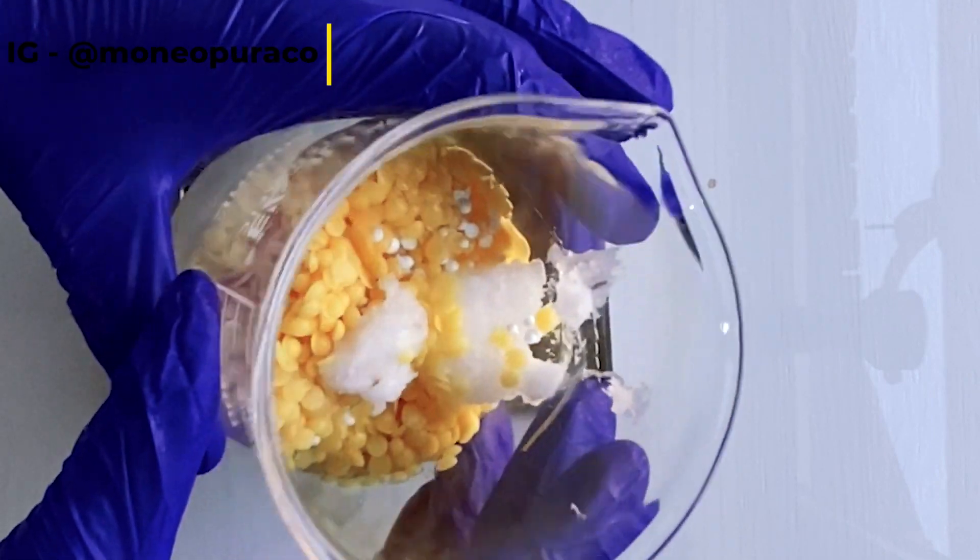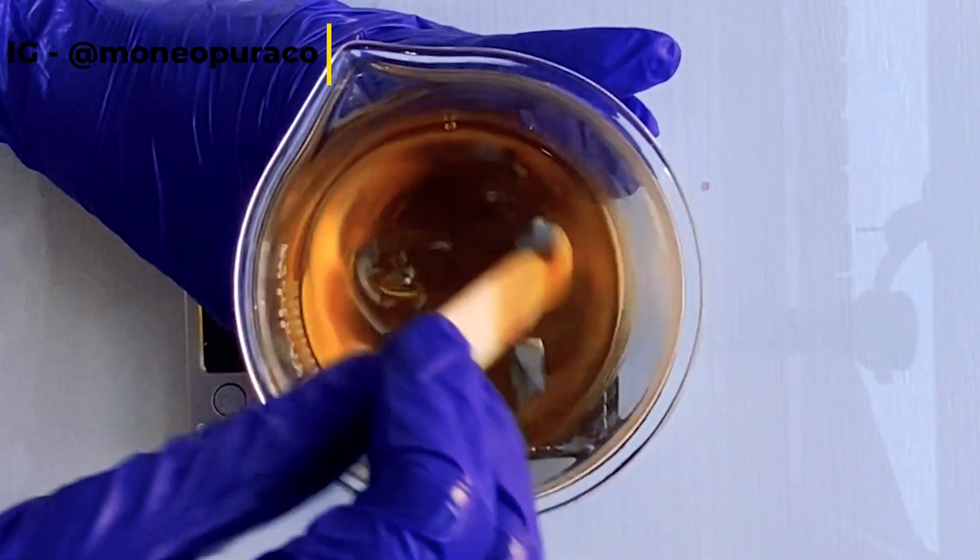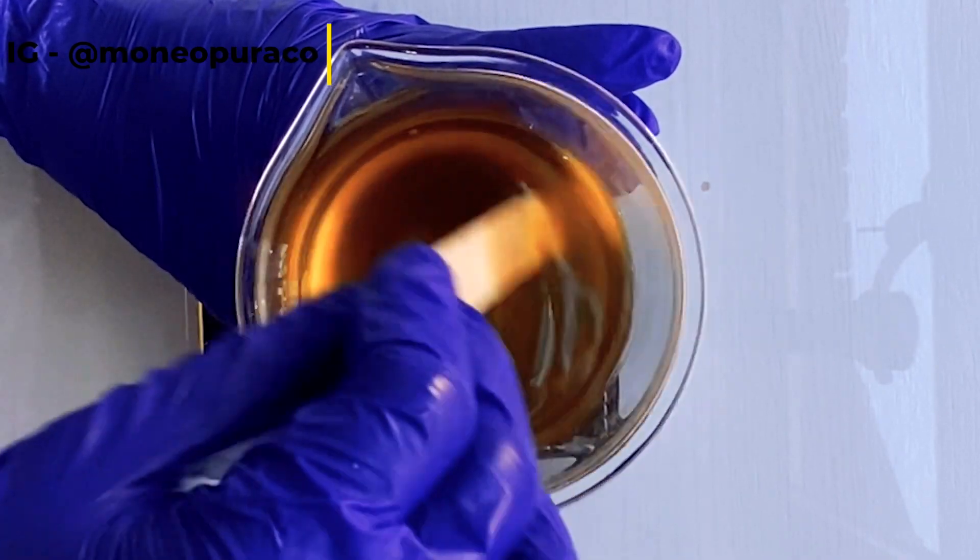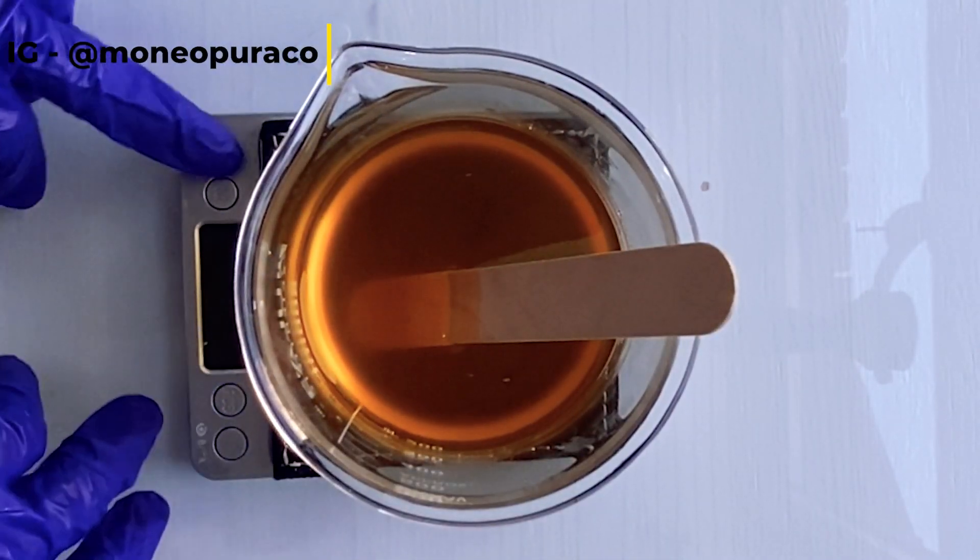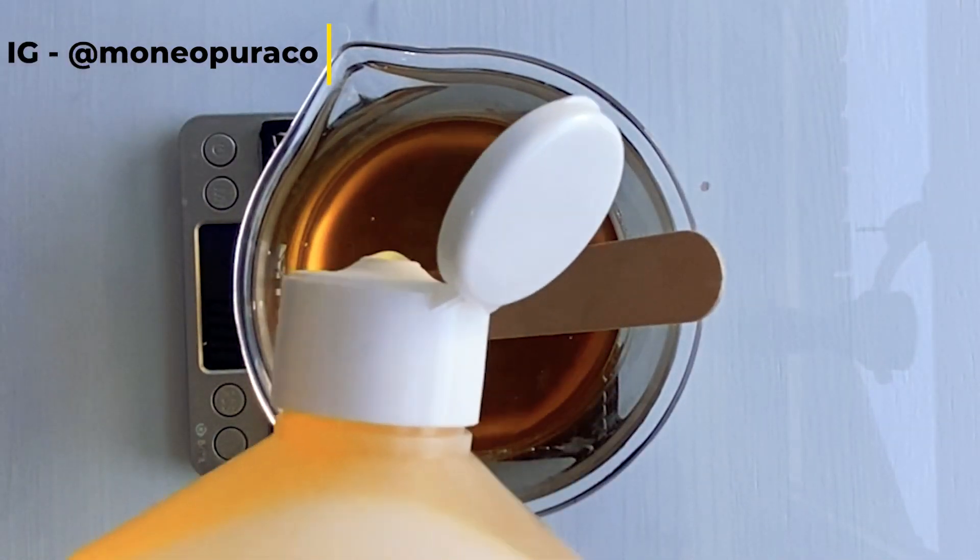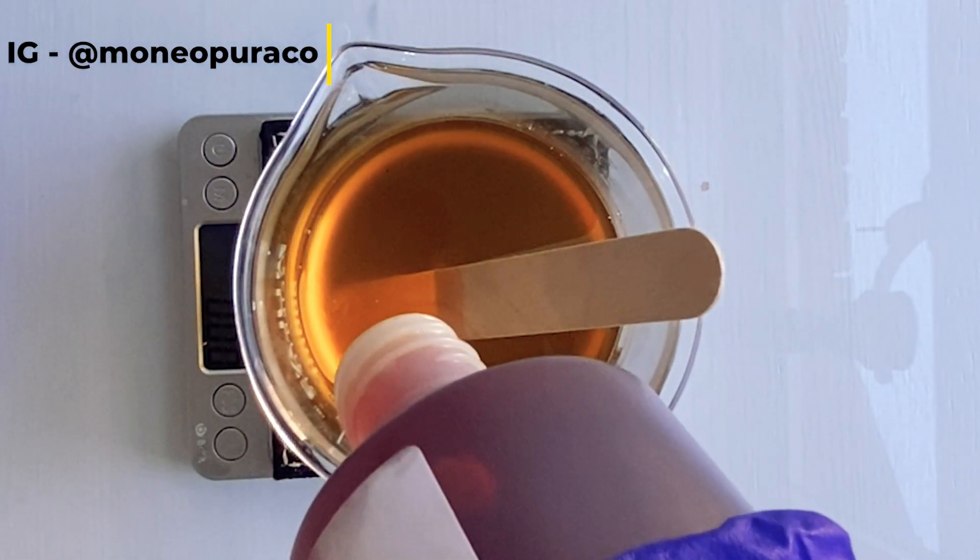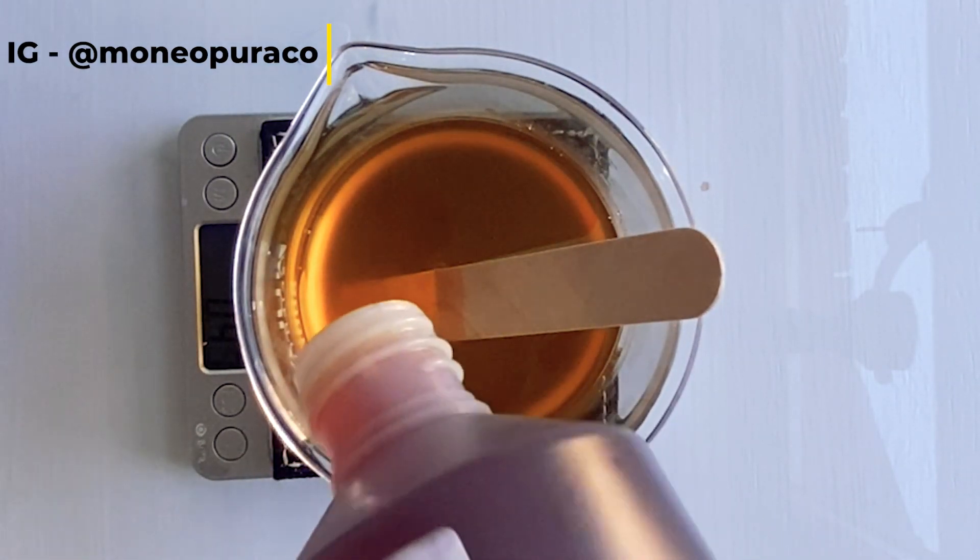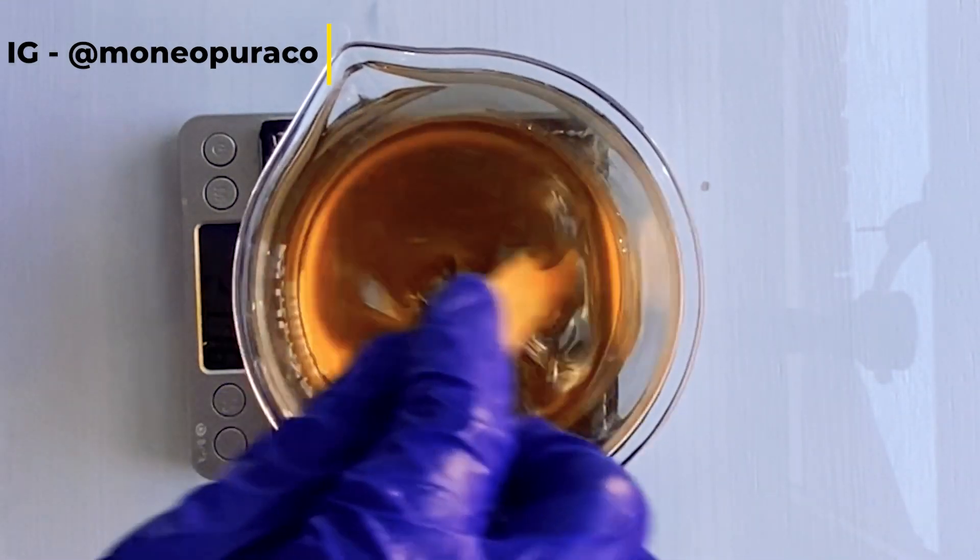So our oil is melted, so we're going to add the rest of our cool down phase, which is really just our vitamin E and jojoba oil. We need two grams of jojoba oil, 0.6 grams of our vitamin A oil. We're going to mix all of that in.